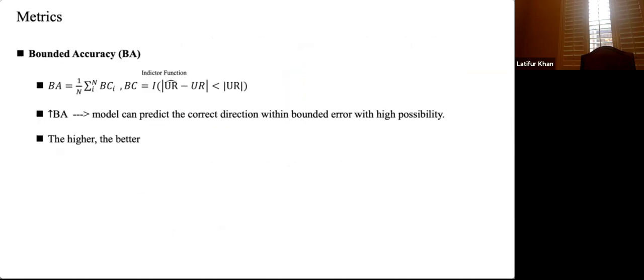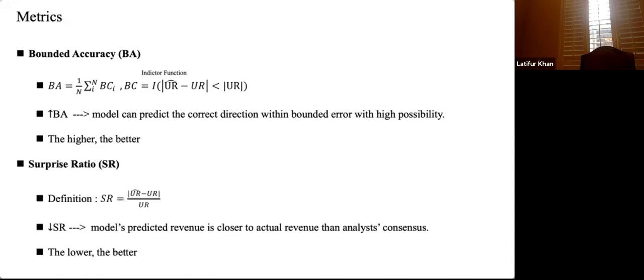We propose two metrics to measure model performance. The first is bounded accuracy (BA), the average of BC, an indicator that predicted UR_hat should not be far from UR — higher BA means better performance. The second is surprise ratio (SR), computed as the absolute value of (UR_hat minus UR) minus UR — lower SR means better performance.